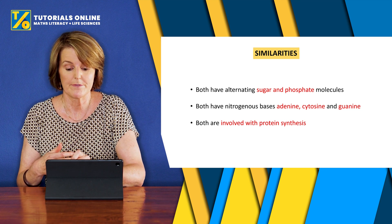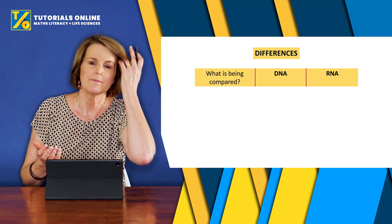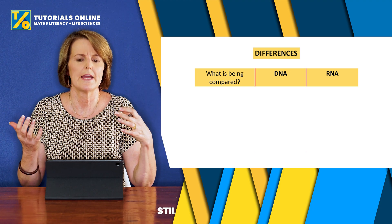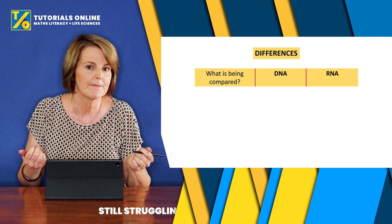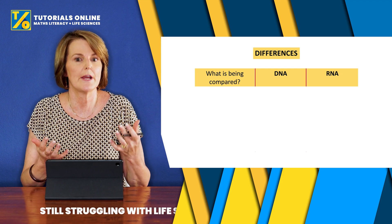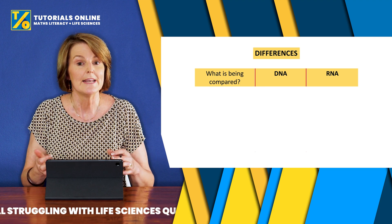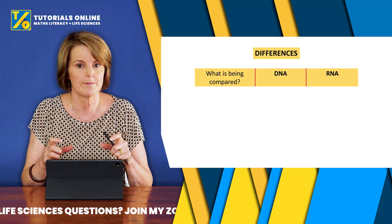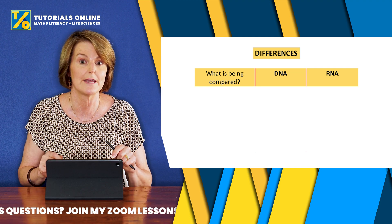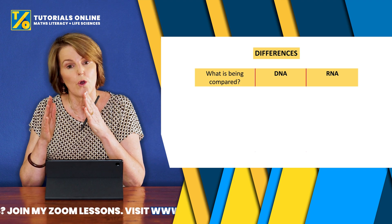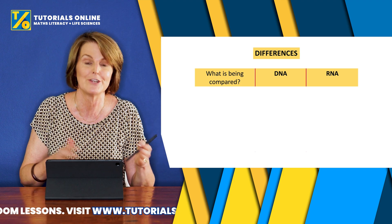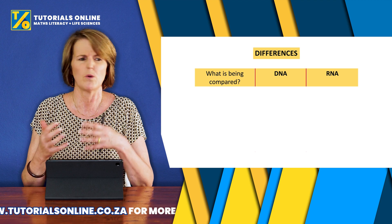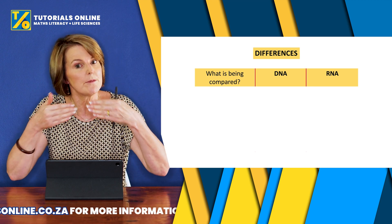Now let's look at some of the differences. Sometimes a question will ask you to compare DNA and RNA, or to tabulate the differences between them. When you tabulate differences between two things, I always recommend making a third column, like I have on the screen here. The first column is what you are comparing, and this is a really good habit to get into — otherwise your marker doesn't know what you're actually comparing, because you have to compare the same things every time.